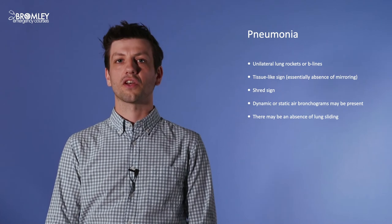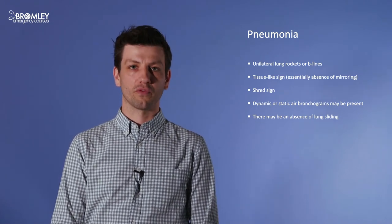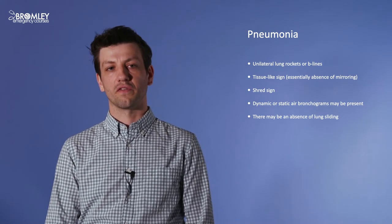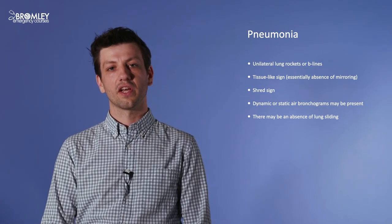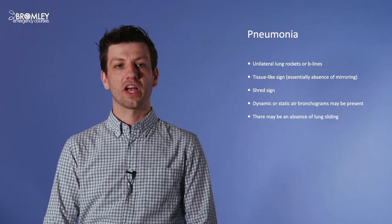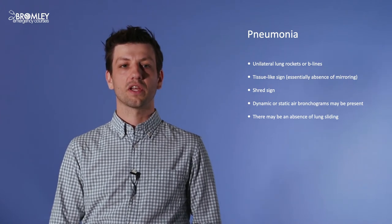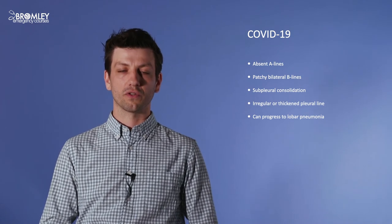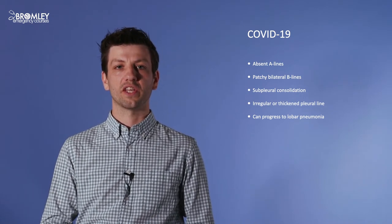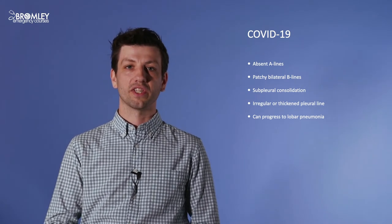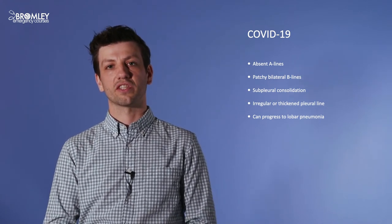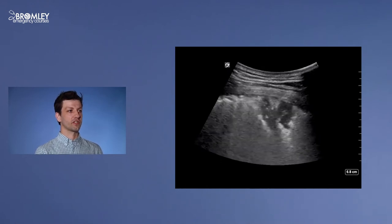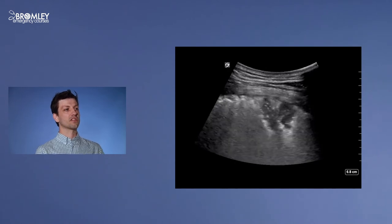For pneumonia, some things you might see include unilateral focal B lines, the tissue-like sign or shred sign at the border of consolidated and normal lung, and dynamic or static air bronchograms, as well as absence of lung sliding. In COVID-19 the typical picture includes absence of A lines, patchy bilateral B lines, subpleural consolidation, and irregular or thickened pleural line — which can progress to lobar pneumonias. Here is a video of subpleural consolidation, showing irregular pleural line with subpleural consolidation right at the pleural line.